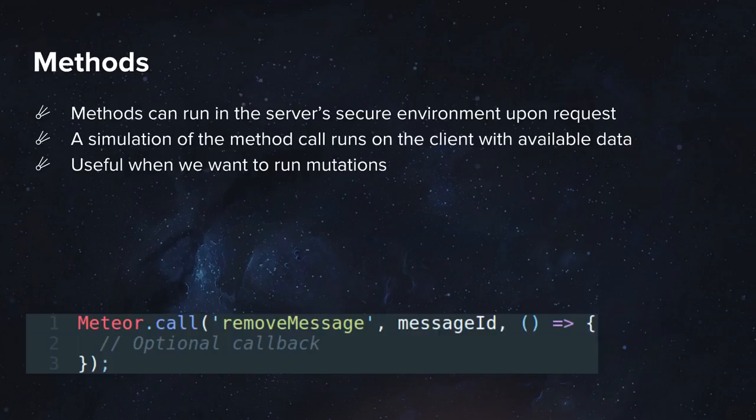Along with subscriptions, which are used to fetch data, you're going to have Meteor methods, which are mostly used to run mutations or any kind of operation which requires a secure environment. Meteor methods should be called twice — once on the client and once on the server — whenever you want to run a mutation.